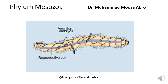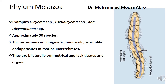There is a disagreement between zoologists. Examples of Phylum Mesozoa include Dicyema, Pseudodicyema, and Dicemini. These are three genera, and approximately 50 species have been described.